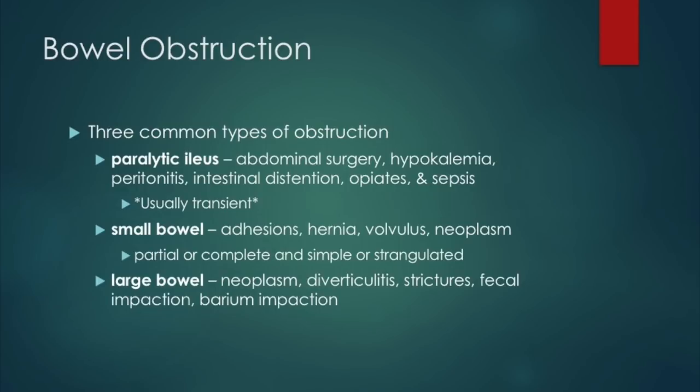Small bowel obstructions are common from adhesions within the abdominal cavity, hernia, volvulus, and neoplasm. They can be partial or complete, and described as simple or strangulated. Large bowel obstruction is commonly from neoplasms, diverticulitis, strictures, fecal impaction, and barium impaction.